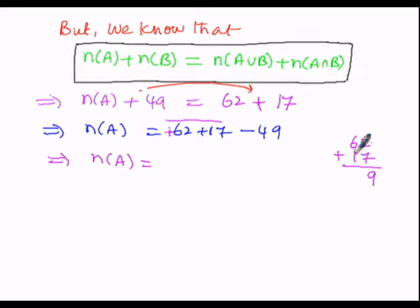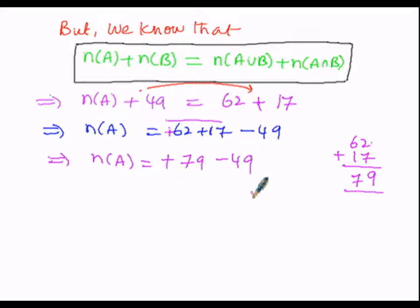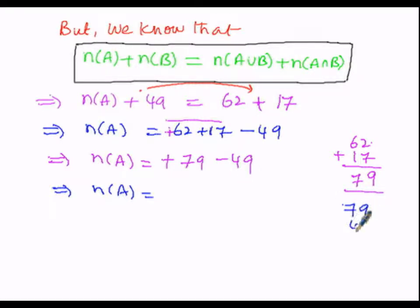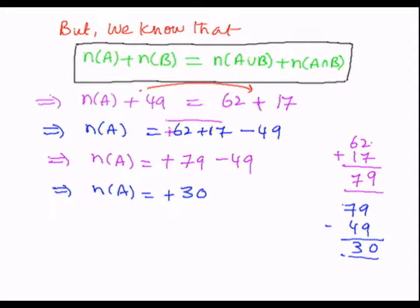First, add 62 and 17: 7 plus 2 is 9, 6 plus 1 is 7, giving 79. Since 62 is positive, 79 takes the sign of positive. Minus 49 is copied as is. To simplify: plus of minus is minus, so subtract 49 from 79. 9 minus 9 is 0, 7 minus 4 is 3, giving 30. Since 79 is greater than 49 and 79 is positive, 30 takes the sign of positive. Therefore, N of A is 30.